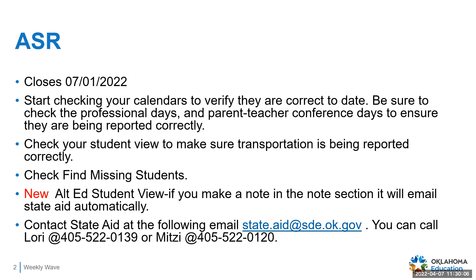New this year, we have an Alt-Ed student view. Once you're looking at that, if you have questions, you can make a note in the notes section and it will email state aid automatically. If you have any questions about the ASR, contact state aid at state-aid@sde.ok.gov, or you can call Lori at 405-522-0139 or Mitzi at 405-522-0120.